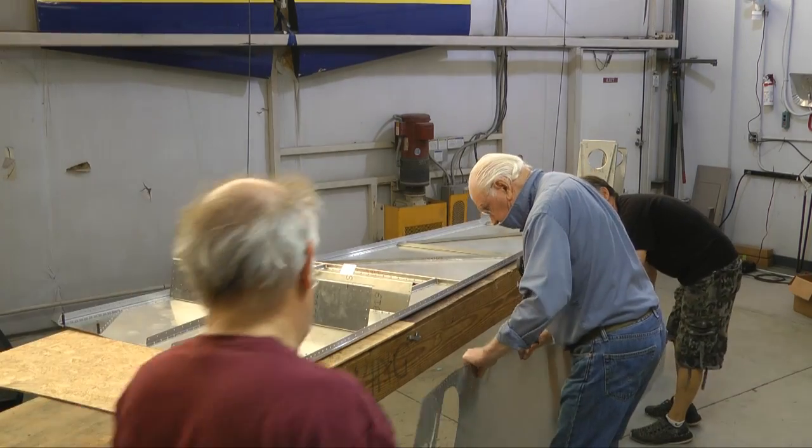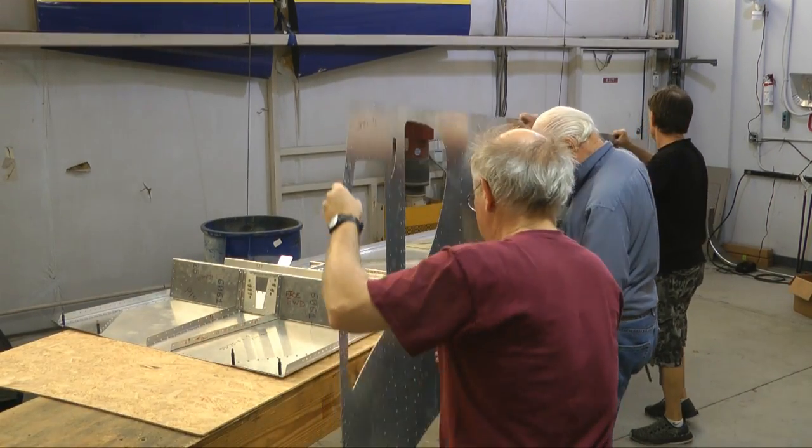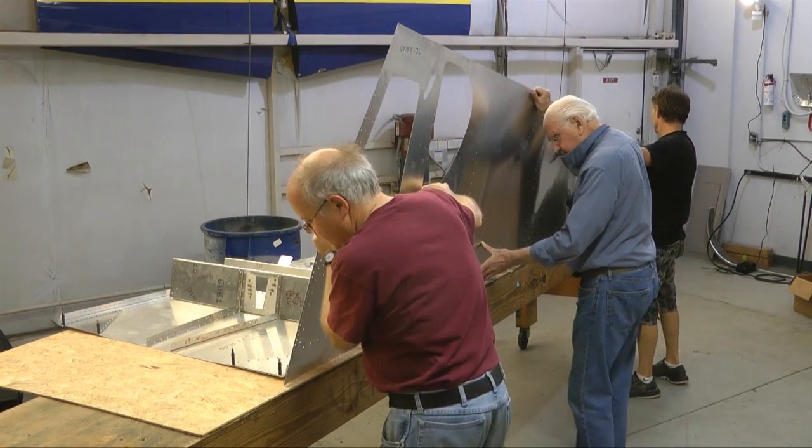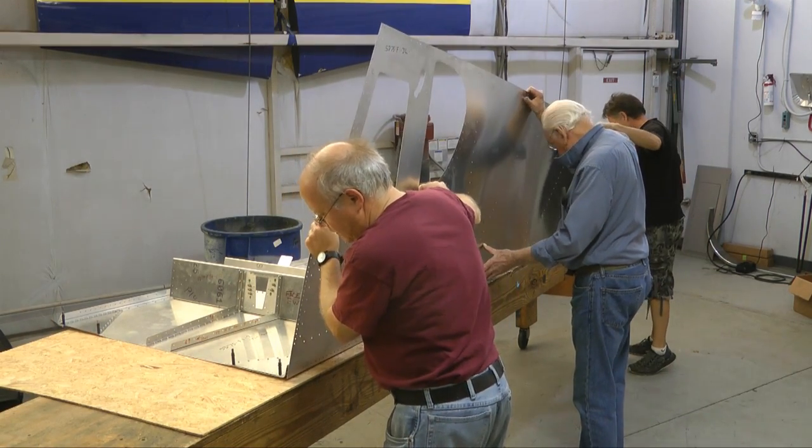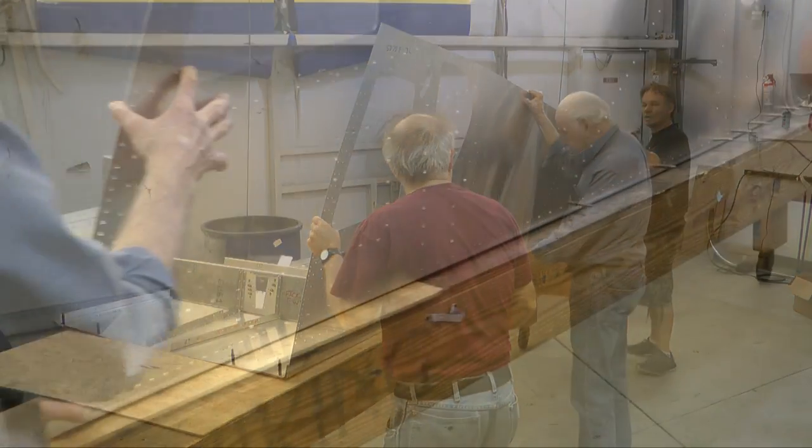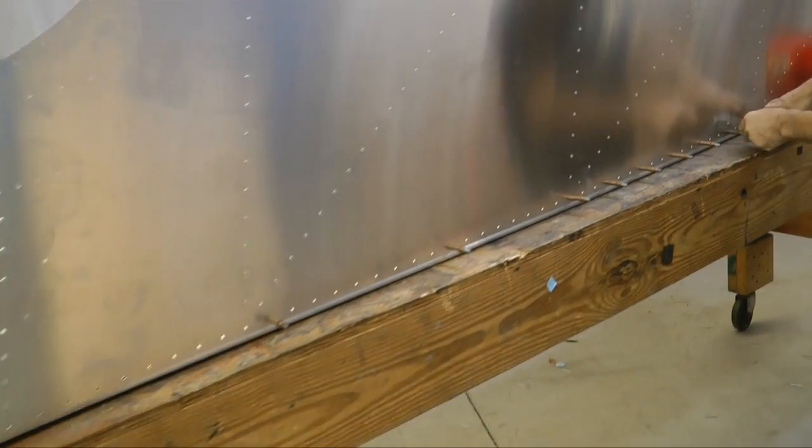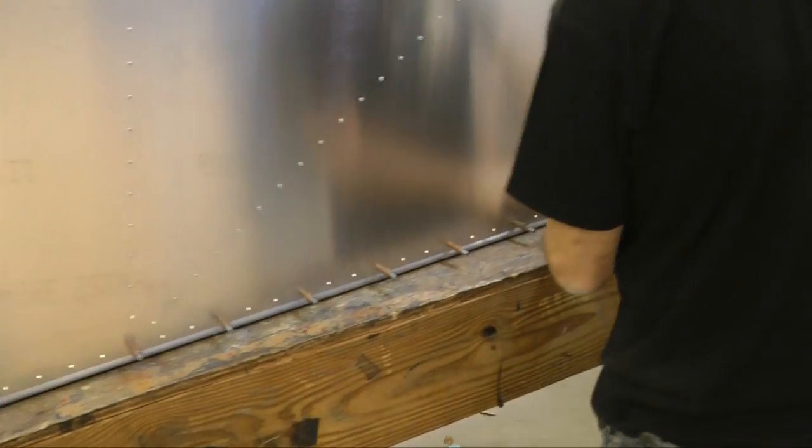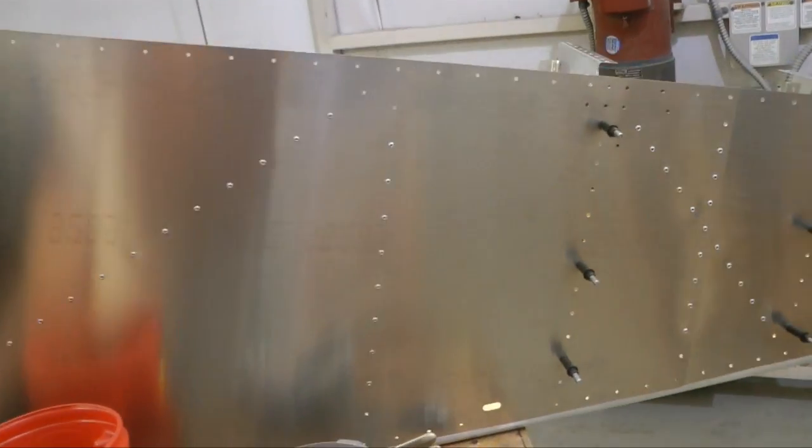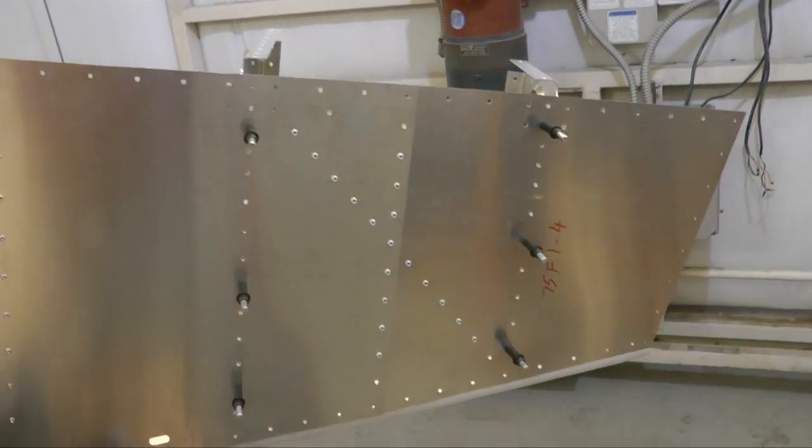Now it's time to install the side skin onto the bottom skin. The bottom edge of the side skin rests on top of the longeron. We simply line up the holes. And then we go ahead and start Clecoing. We want to start towards the rear where those frames are located at the back.